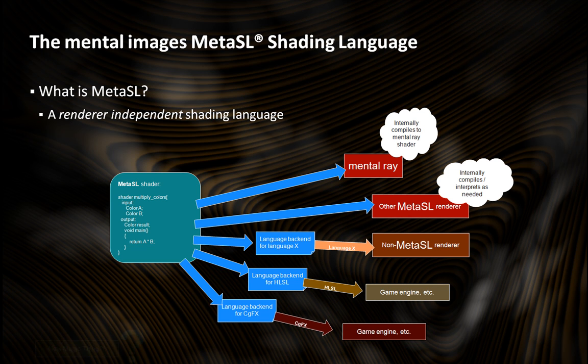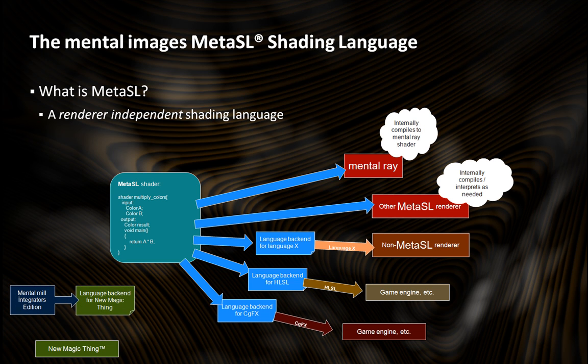So what if in the future some new magic thing that we didn't think about pops up? The thing is that you can also write additional language backends because these are plugins. So you use something called the MentalMill Integrators Edition — you can write a language backend for whatever new magic language you have, and then you have the full workflow for this language.